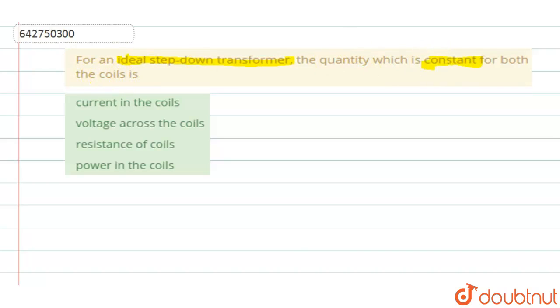Let us see what is a step down transformer basically. Step down transformer is the one in which the voltage across the primary will be greater than the voltage across the secondary. Which means that in the case of step down transformer, the output voltage will be decreased or will be reduced.